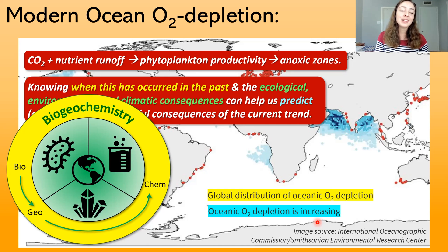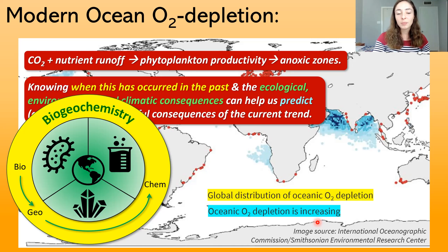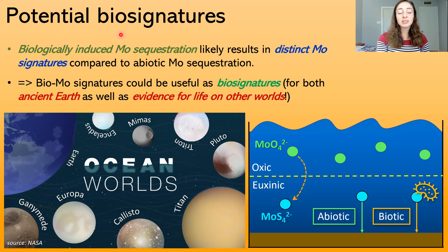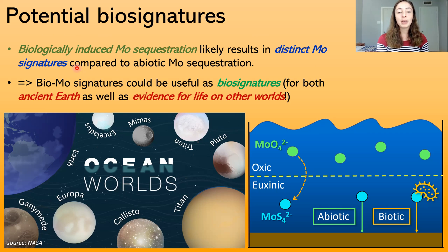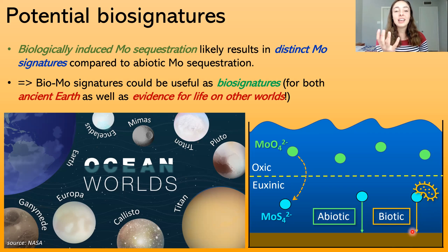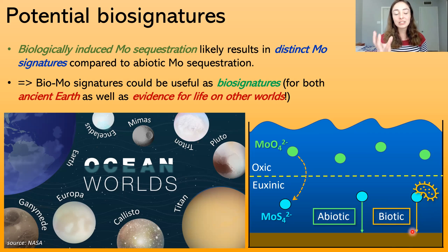You might be wondering about the 'bio' part of biogeochemistry. Biology can also affect and maybe even induce molybdenum sequestration in some settings or in the presence of certain bacteria. This means biology could form distinct molybdenum signatures in the rock record compared to completely abiotically sequestered molybdenum. This biologically sequestered molybdenum has a specific signature we can analyze and say: that had to be formed by biology. In some cases, we might even be able to constrain it to say that had to be formed by a specific species or group of bacteria.